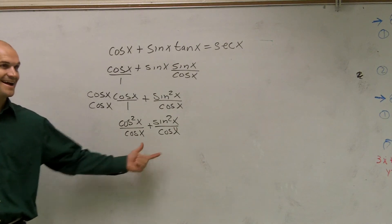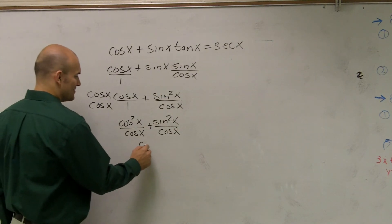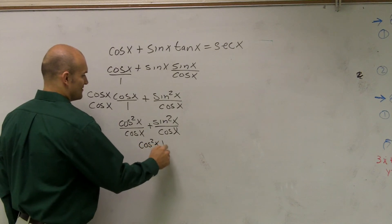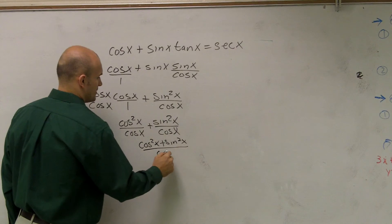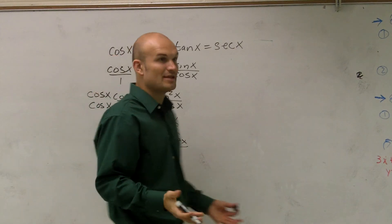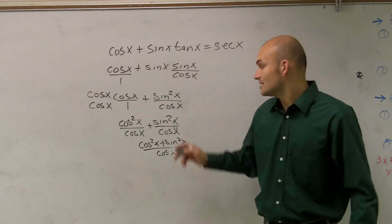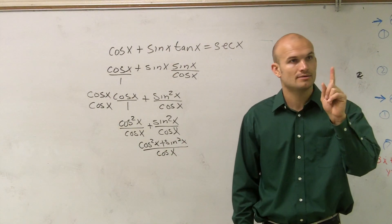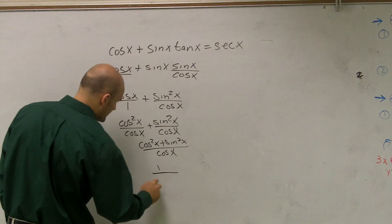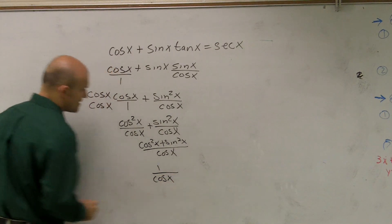So now, I have the same denominator, I can combine them. That is very cool. So remember when I told you that opens up your possibilities? Sine squared plus cosine squared, we know it's going to equal 1. So we have 1 over cosine of x.